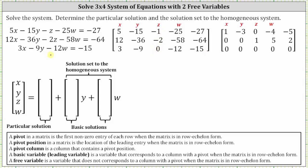The next step is to write the augmented matrix in reduced row echelon form, which is shown here on the right. Now that we have reduced row echelon form, let's determine the pivots, which are the first non-zero entries of each row. The pivots are in row one, column one, and row two, column three, which indicates the pivot columns are column one and column three. Therefore, x and z are the basic variables, and the remaining variables y and w are the free variables, which matches the form of the solution shown below.